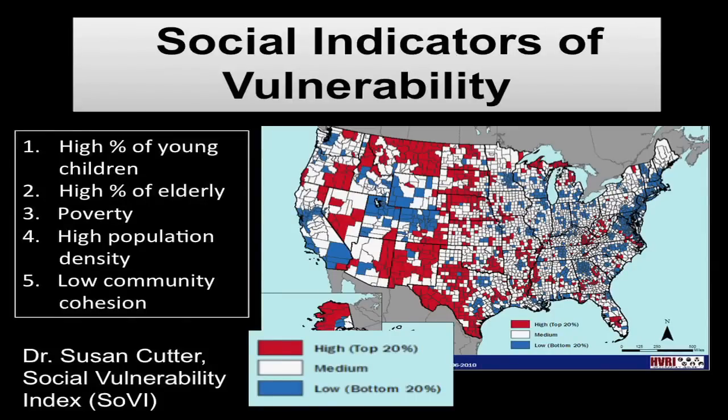Bessie is looking at U.S. Census data to find social indicators of vulnerability: areas with high percentages of young children, elderly people, poor people, high population density, and low levels of community cohesion.